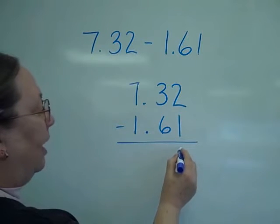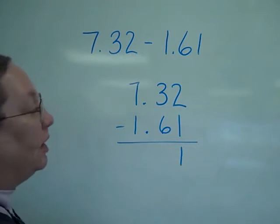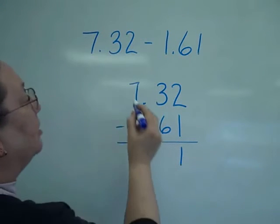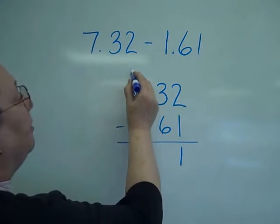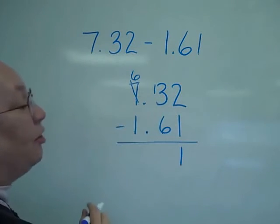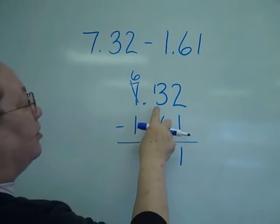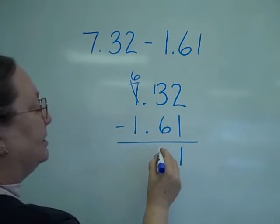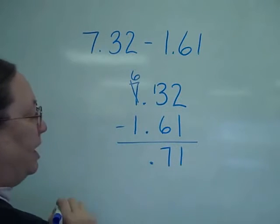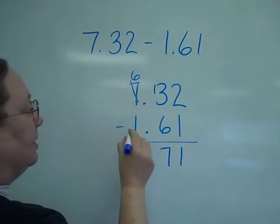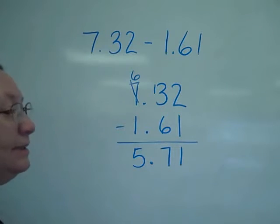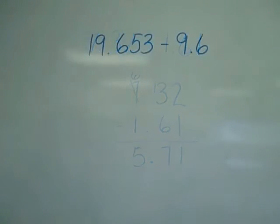Okay, 2 minus 1, I like that, no borrowing, is your 1. And then 6 from 3, I'm going to have to do some borrowing. So I'm going to come over to the 7, make it a 6, which makes that 13. 13 minus the 6 is 7. And again, your decimal is going to drop straight down. And then 6 minus 1 is 5. So it's 5 and 71 hundredths.